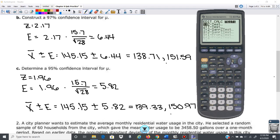And then I'll do this one more time with a 95% confidence level. And we get 139.33, 150.97.